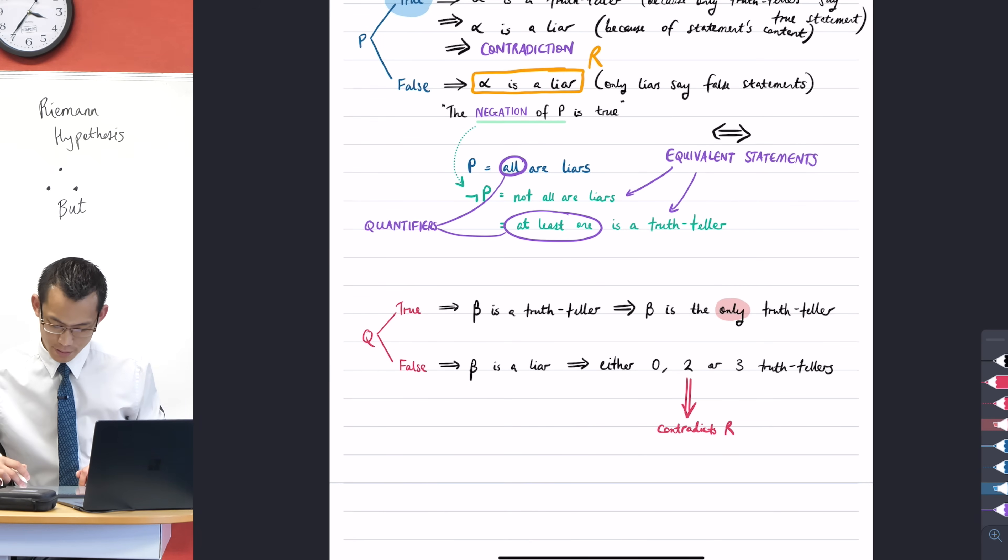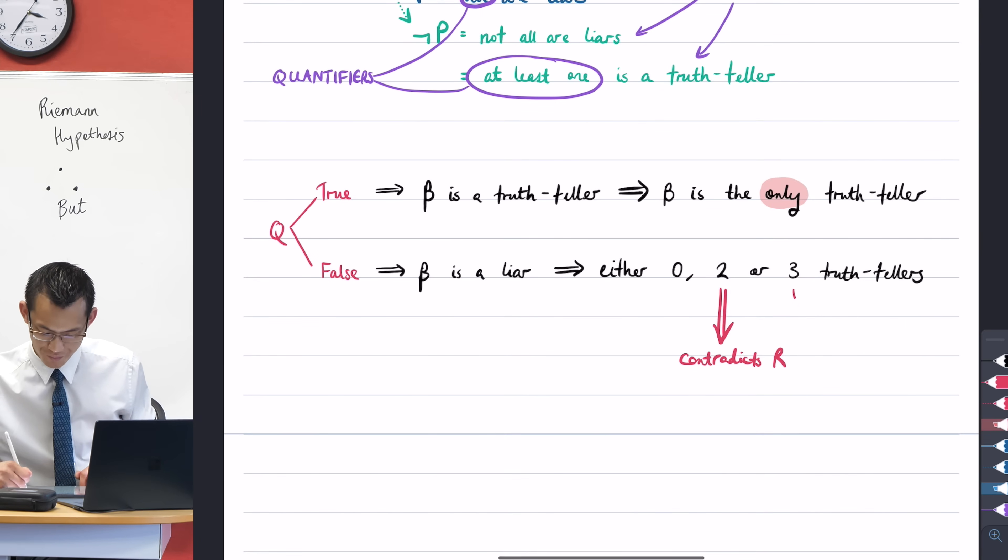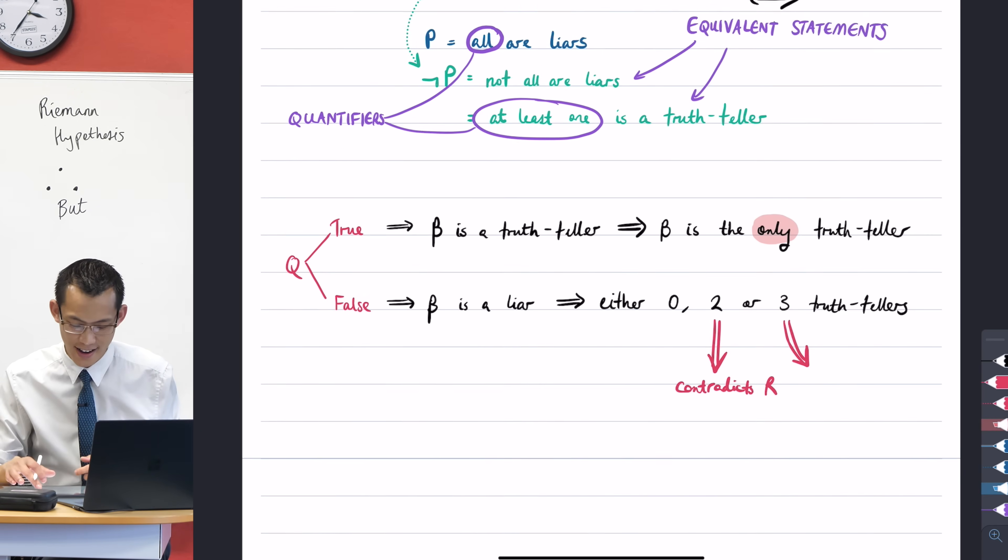What about this statement here, statement three? This contradicts something too. Why can't there be three truth-tellers? Have a think about what we already know. Because the negation of statement P would be first. Okay, so we're looking up here.